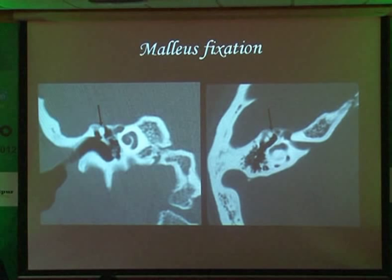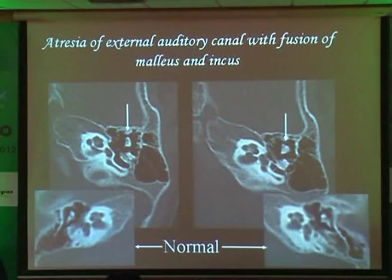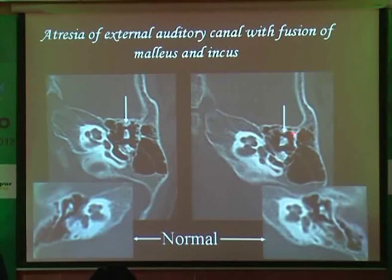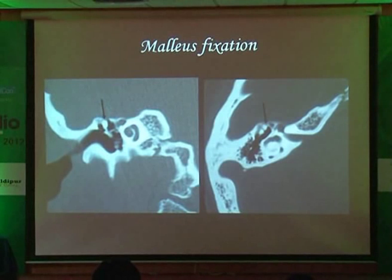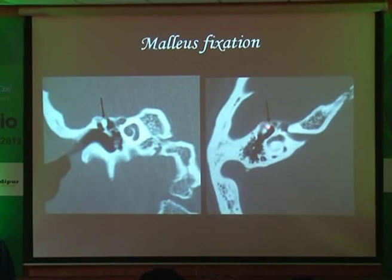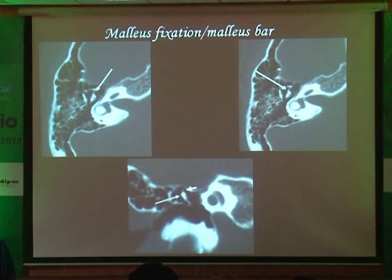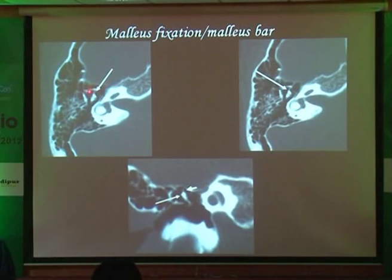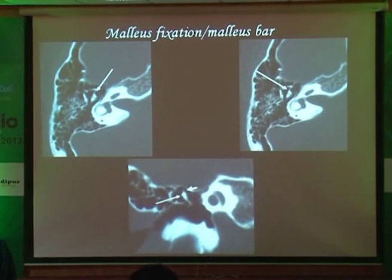Let us look at one more illustration. This is pretty rare: the fixation of the malleus, or malleal fixation — there could also be a malleal bar. You should normally see air within the epitympanic recess above the malleus. But here, the malleus has moved up and become fixed to the epitympanum — this is malleal fixation. You also see a small calcification going out from the malleus: this is a malleus bar, again causing fixation to the epitympanum. Classical ice cream cone appearance is present, but a small osseous bar is fixing the malleus onto the epitympanum.